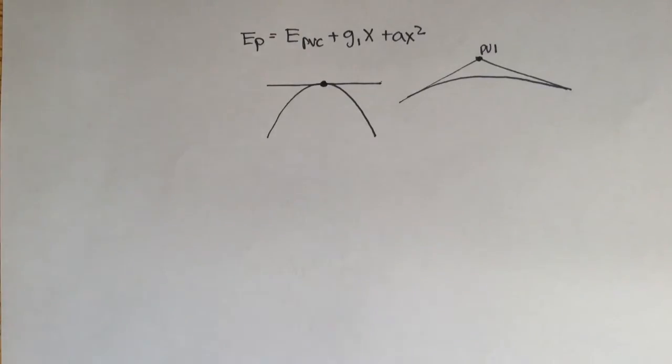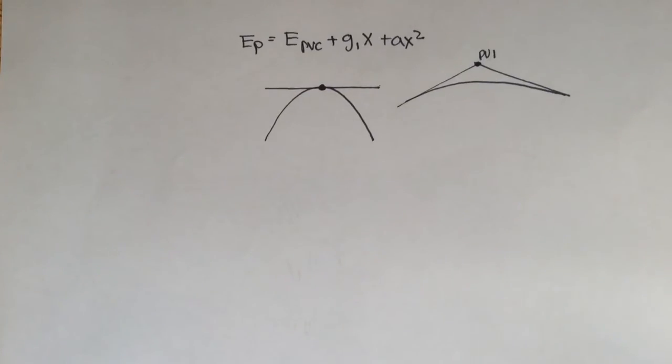So remember that the slope is equal to 0. That's going to give us the highest point. Or if we had a sag curve, that would give us our lowest point. So if we take what we know, slope is equal to 0, and if we apply a little bit of calculus, we can see that in order to find the point along a vertical curve that will give us our highest point or our lowest point,